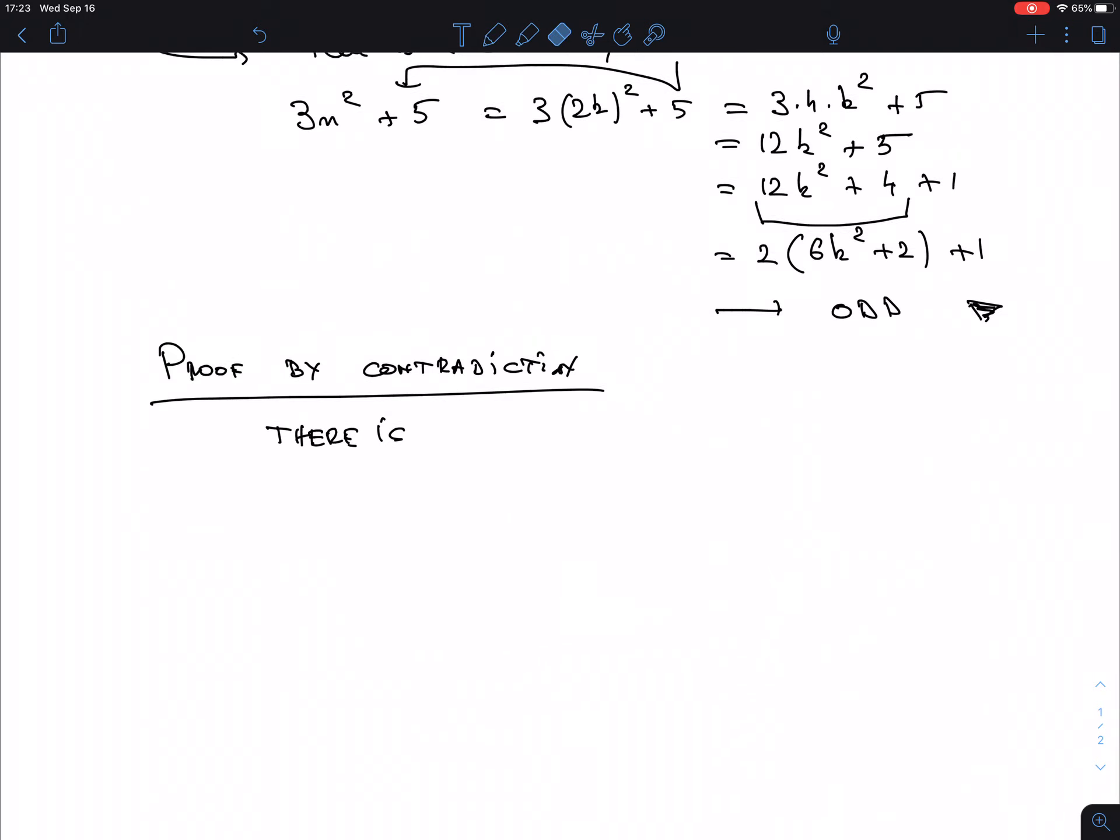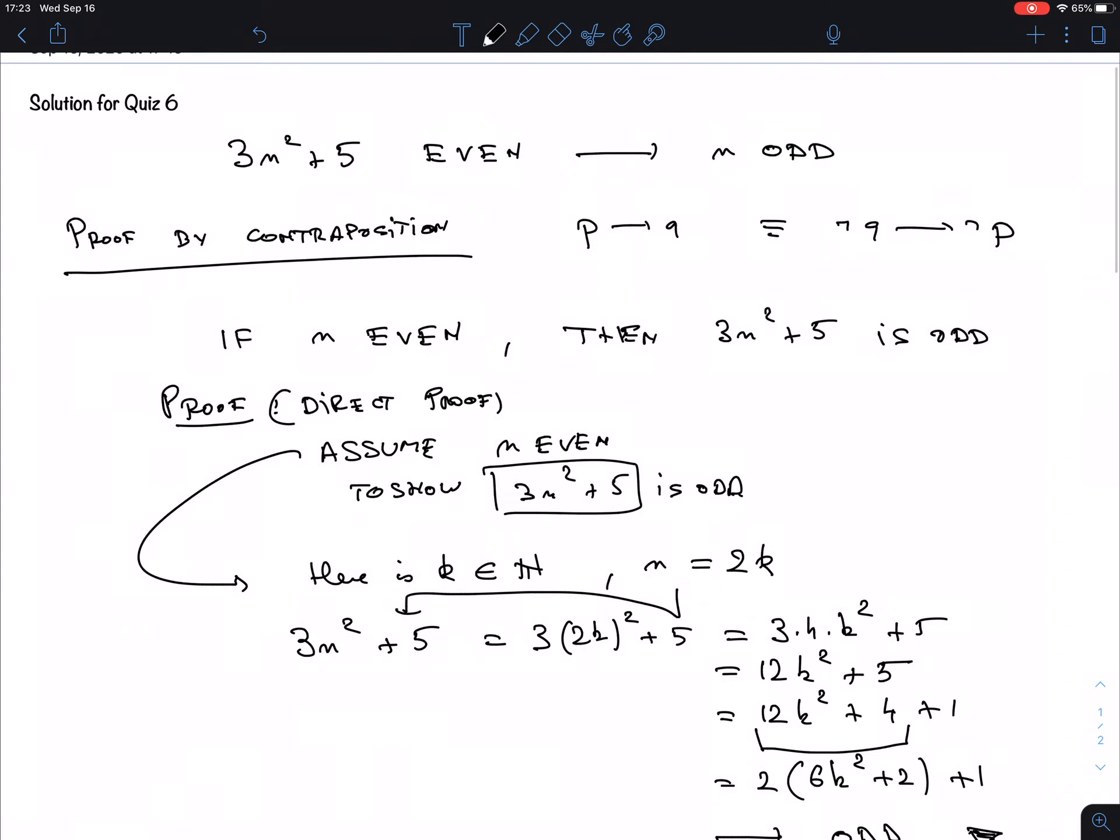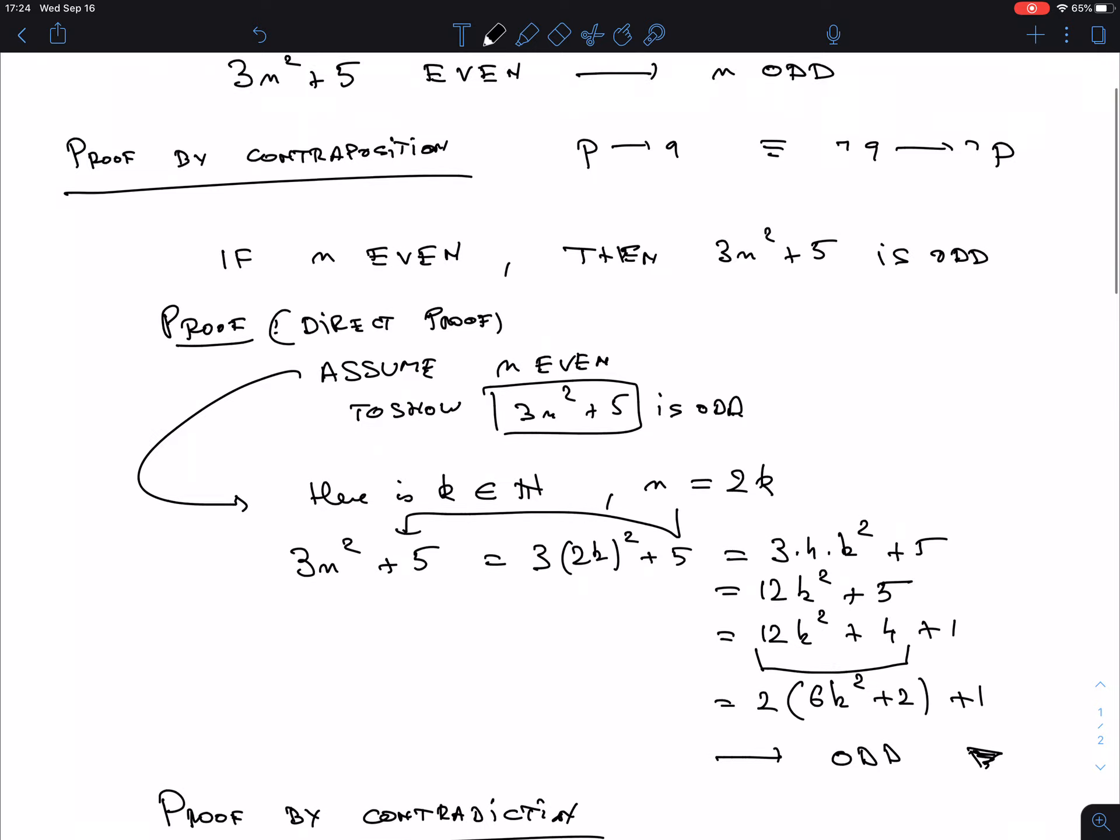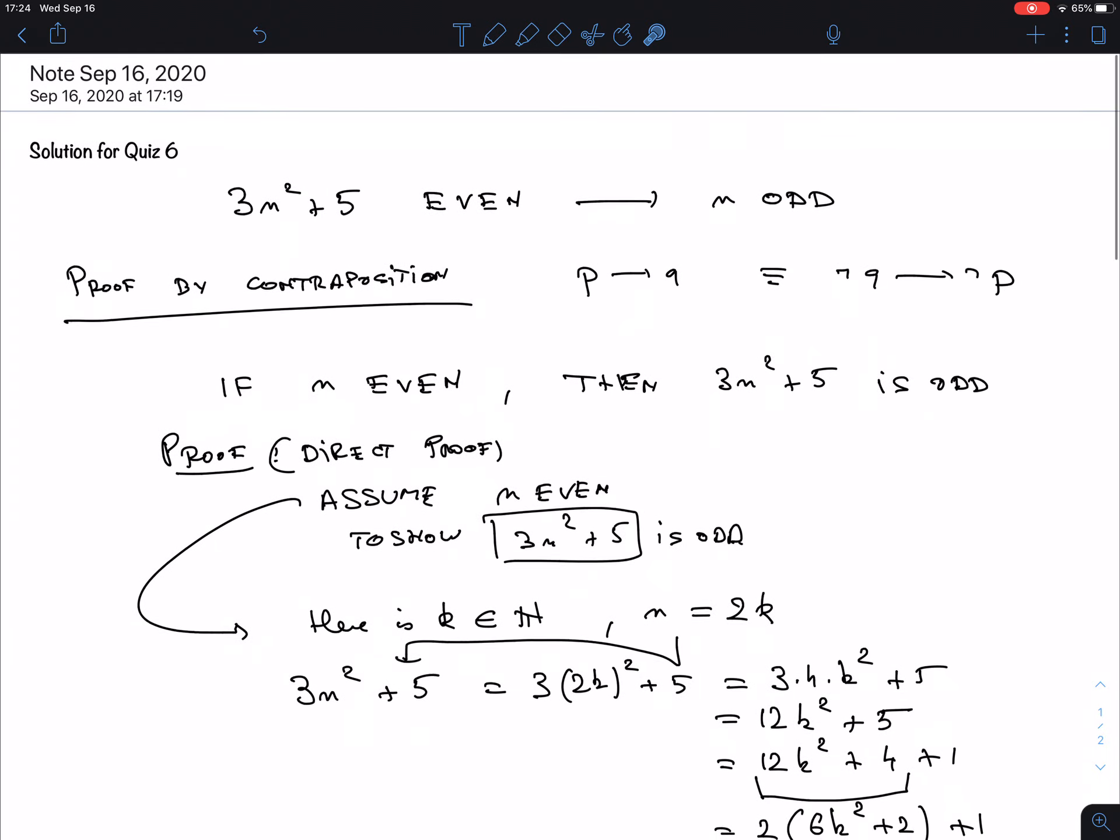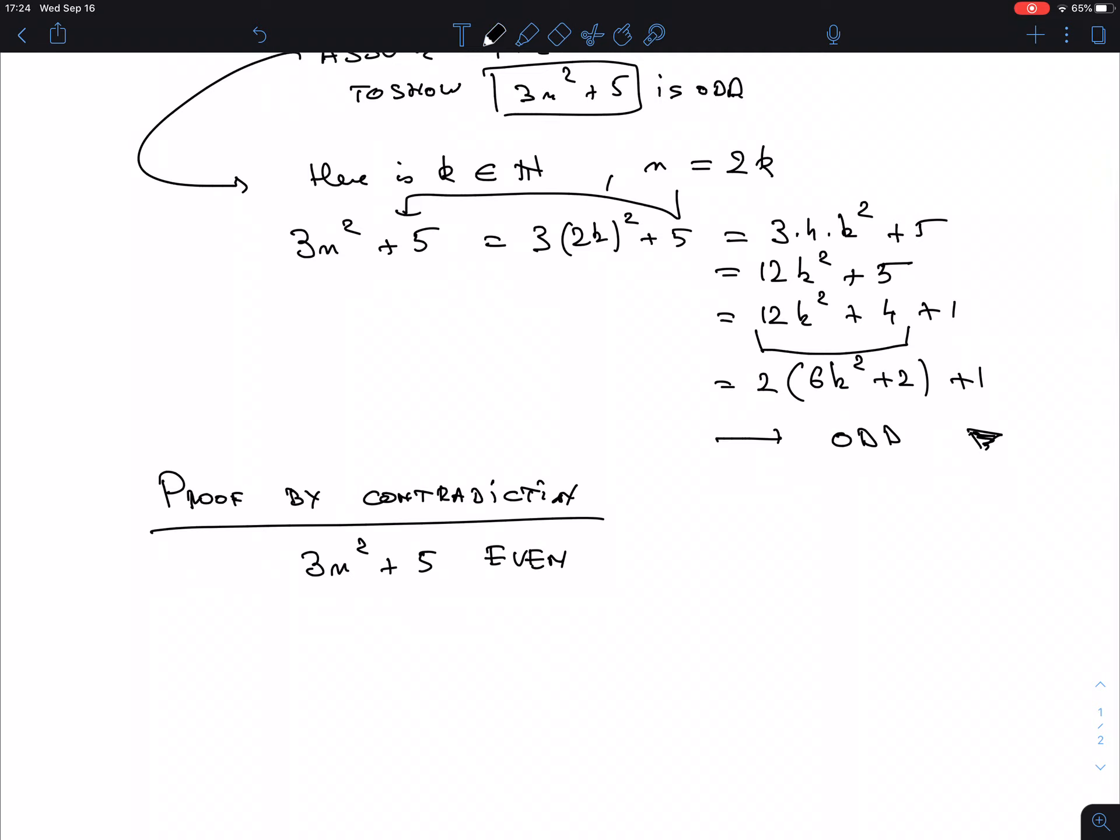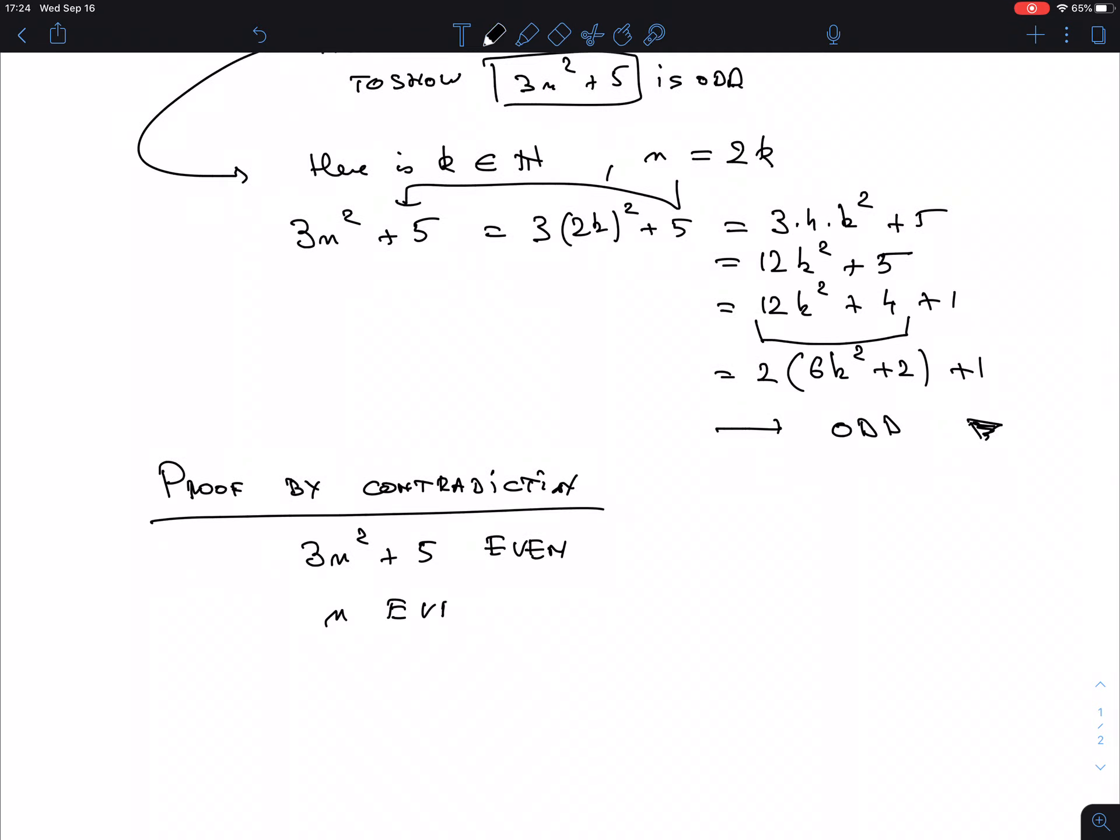So let me state what that is. I'm assuming that 3n squared plus 5 is what we claim it to be: even. But somehow the conclusion is false, in other words n is not odd, therefore n is also even. So now we're assuming both these things.